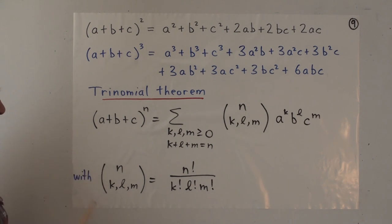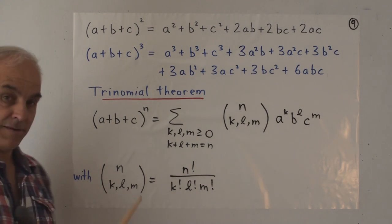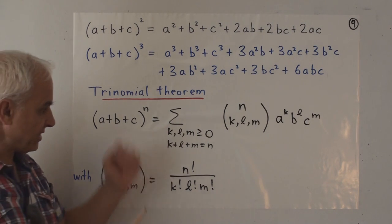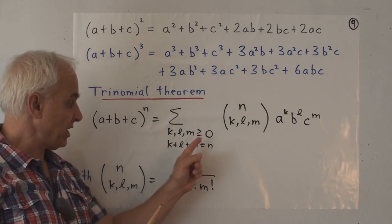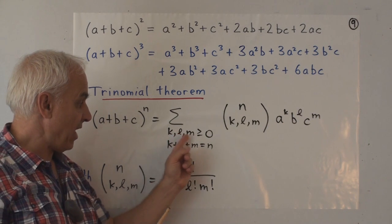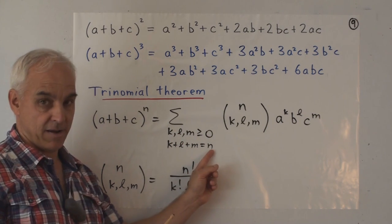And here is the general trinomial theorem that tells you that when you expand a plus b plus c to the n then you get a sum over all positive integers k, l, and m that add up to n.